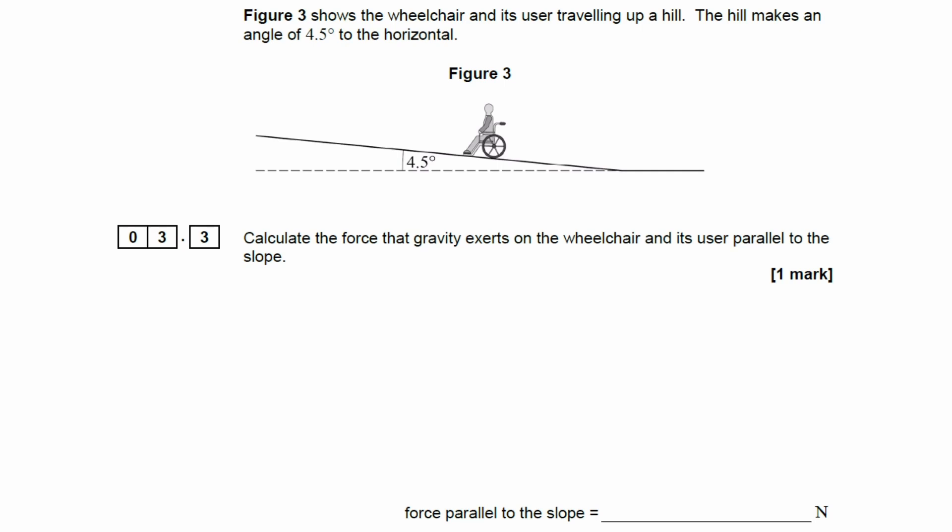Figure 3 shows the wheelchair and its user traveling up a hill. The hill makes an angle of 4.5 degrees to the horizontal. Calculate the force that gravity exerts parallel to the slope. I think the best thing to do would be to redraw this diagram with an exaggerated angle so we can resolve the forces more easily.